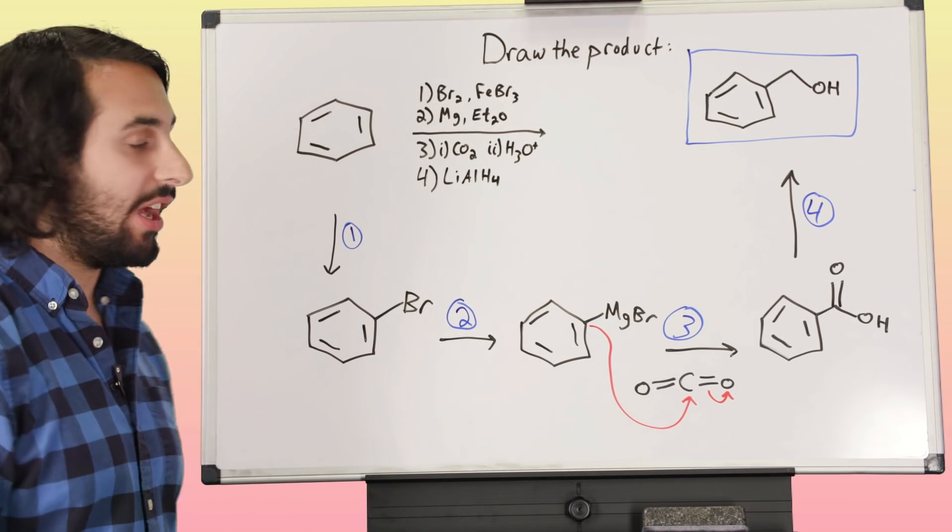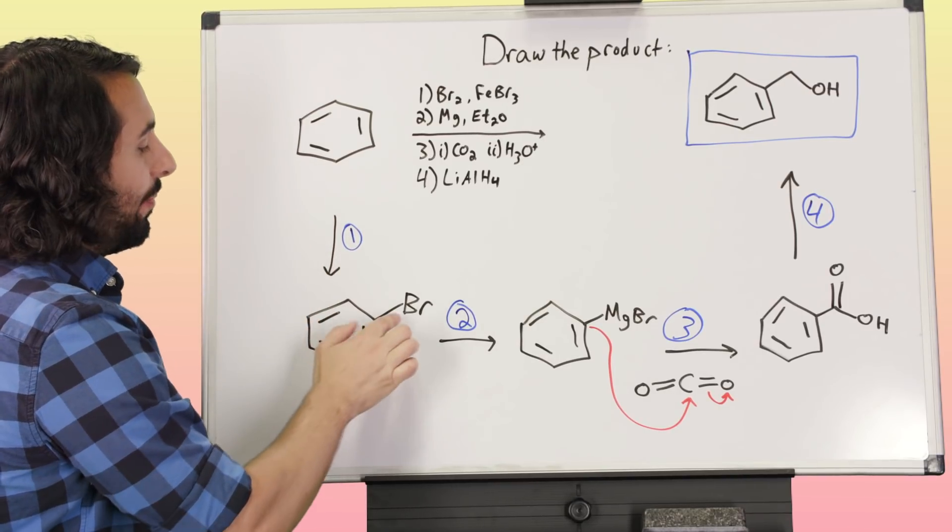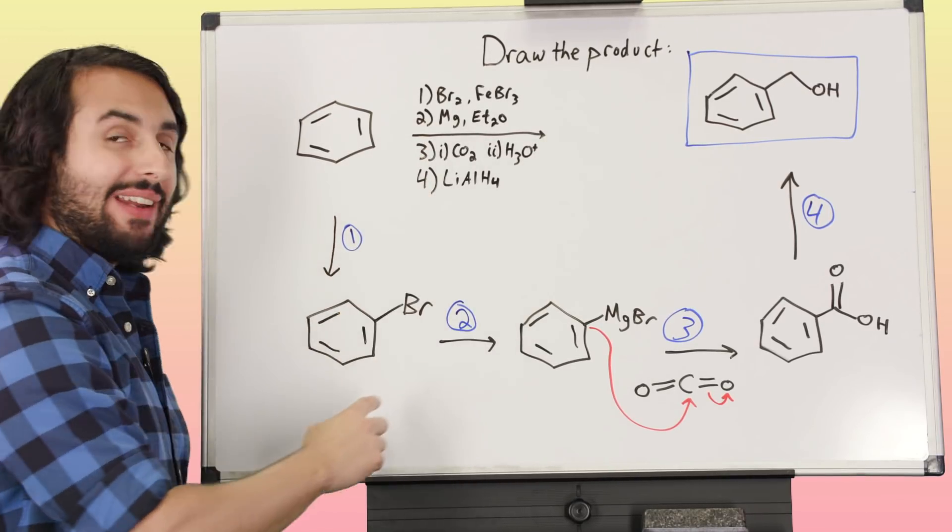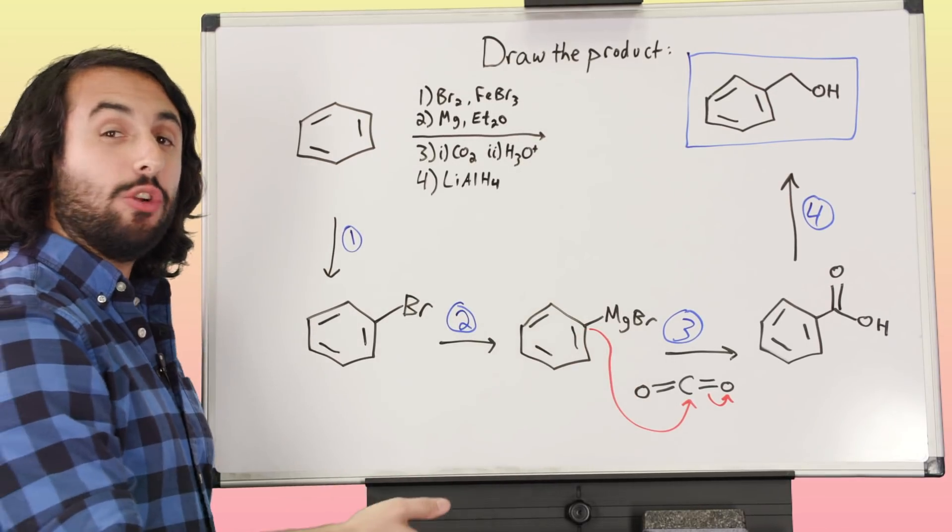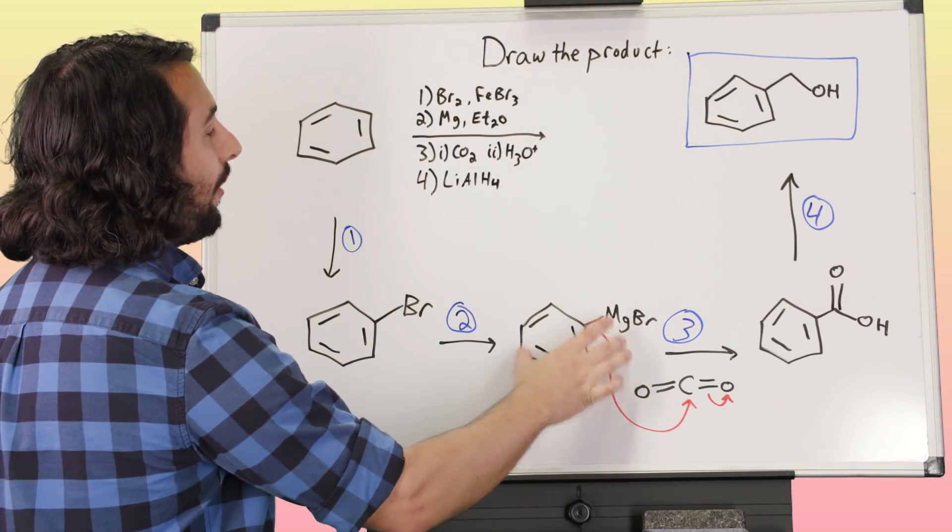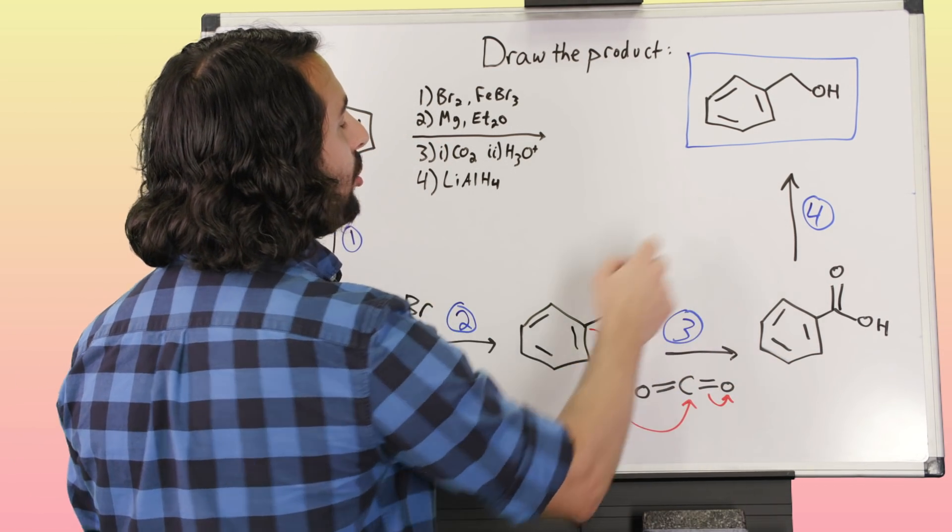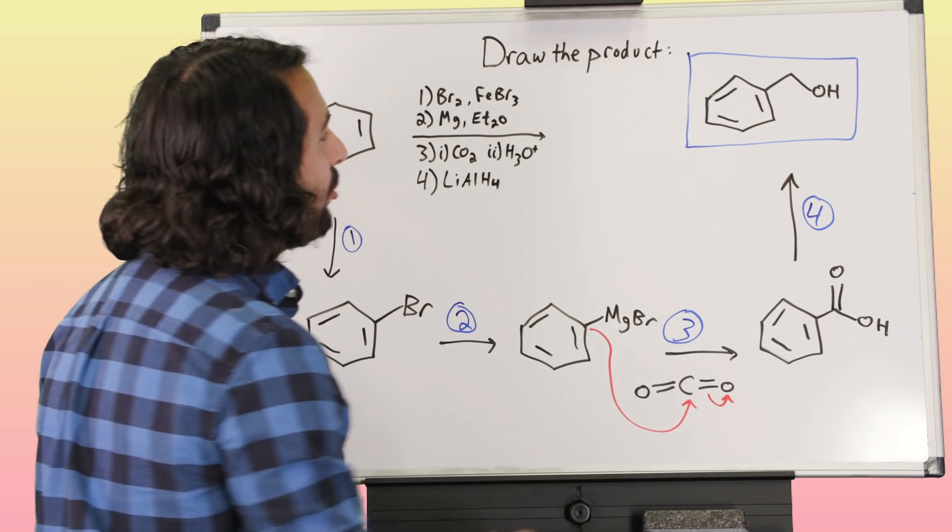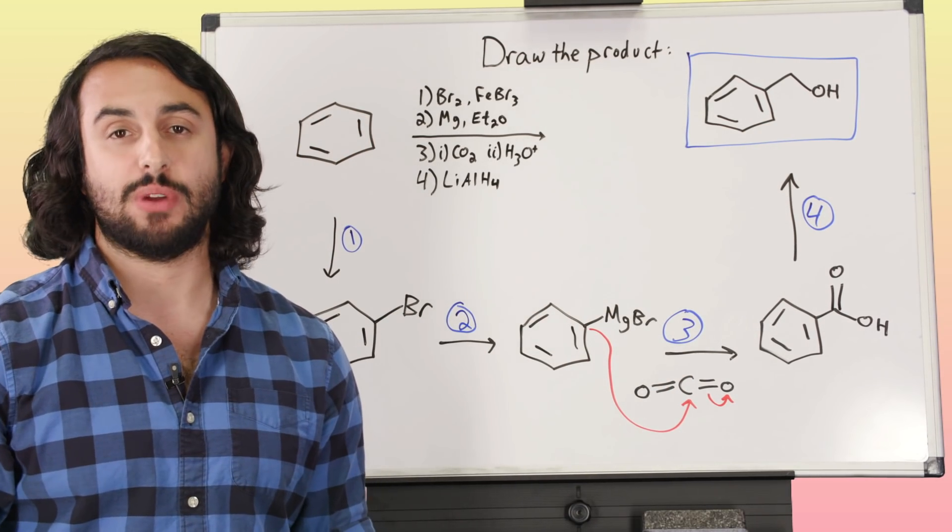So once again, we did electrophilic aromatic substitution—a bromination here, pop the bromine on there. The magnesium allowed us to make the Grignard reagent. Then we did a Grignard reaction with our Grignard reagent and CO2 to get benzoic acid, and then from there we reduced with lithium aluminum hydride to get this alcohol. And that is the product of this sequence of reactions.